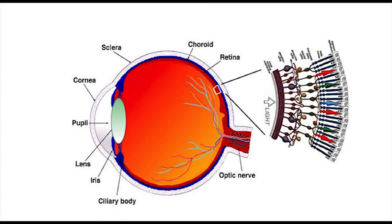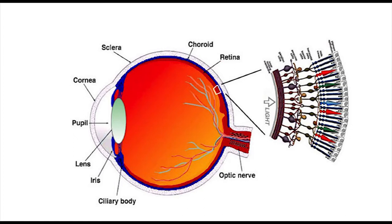The information — our sight — comes in through the cornea and through the pupil. The lens then focuses this information back on the retina. The pupil will dilate or contract, just like a camera lens, depending on how much light is entering.